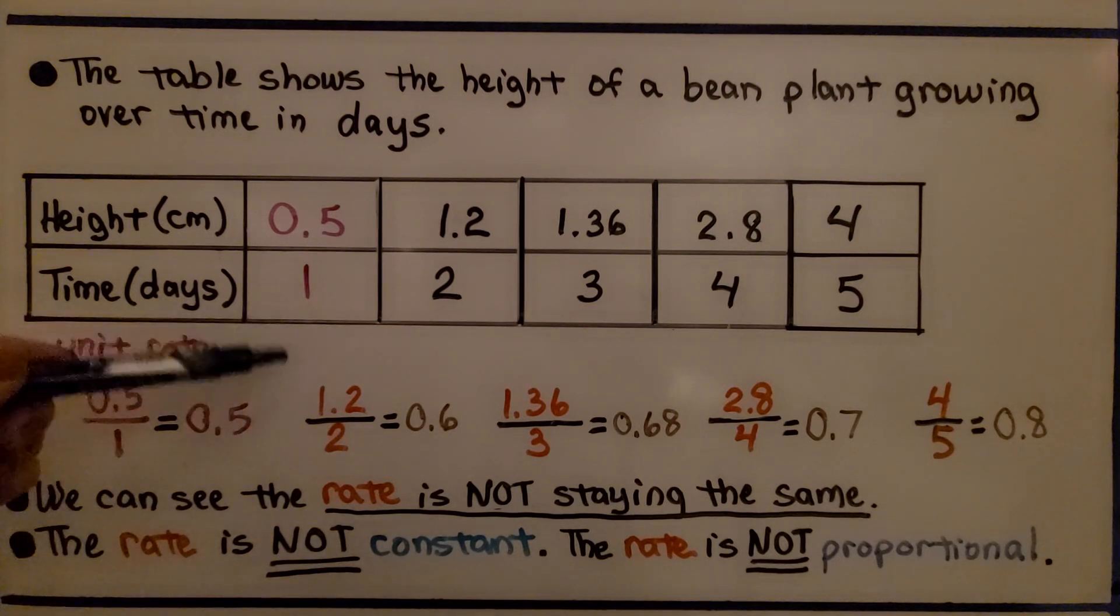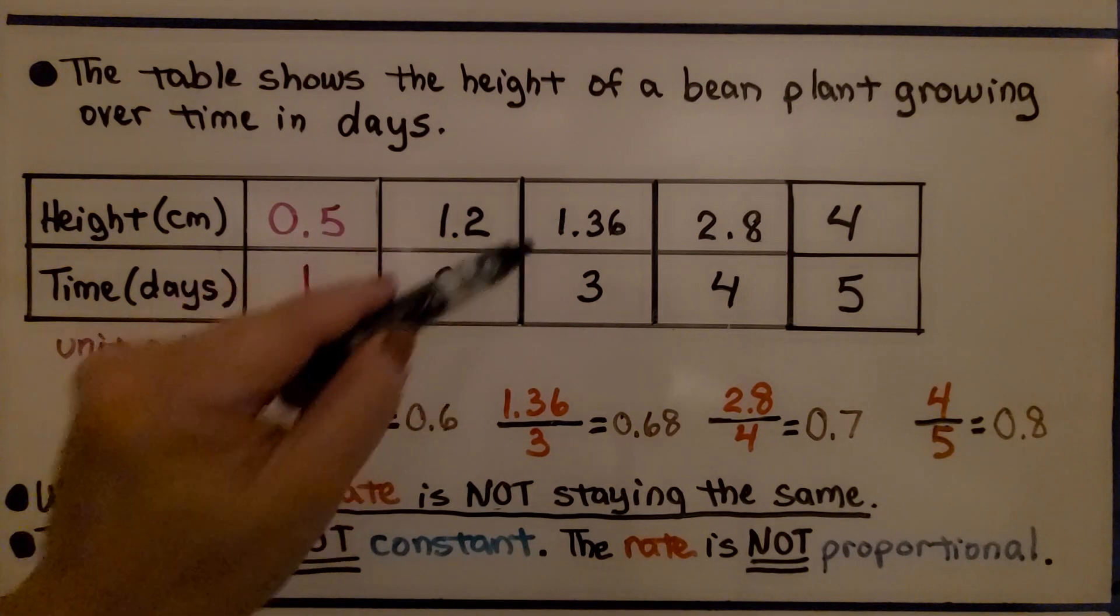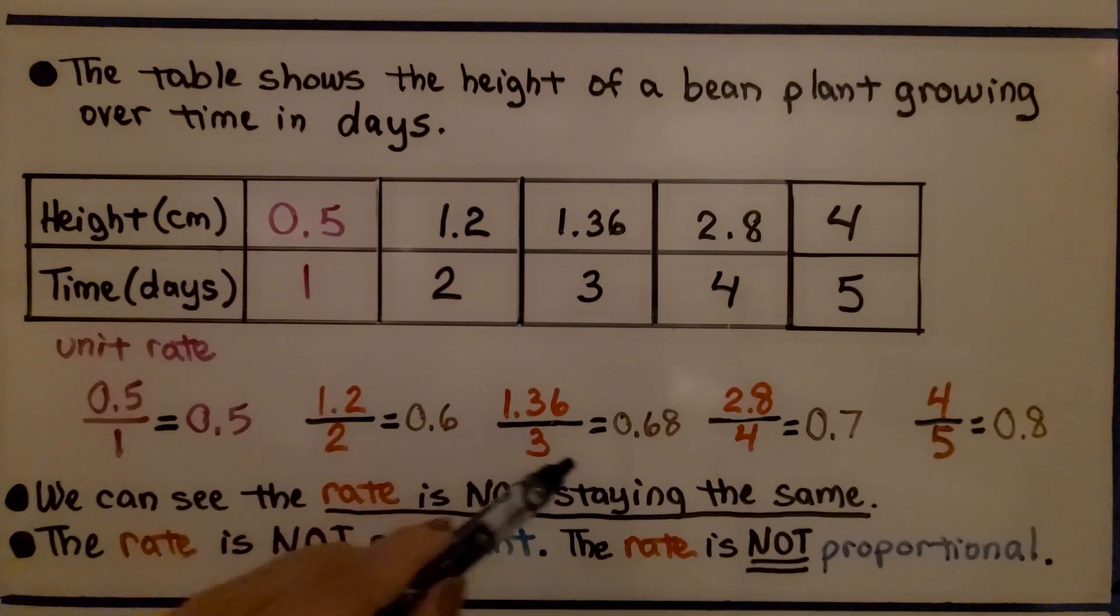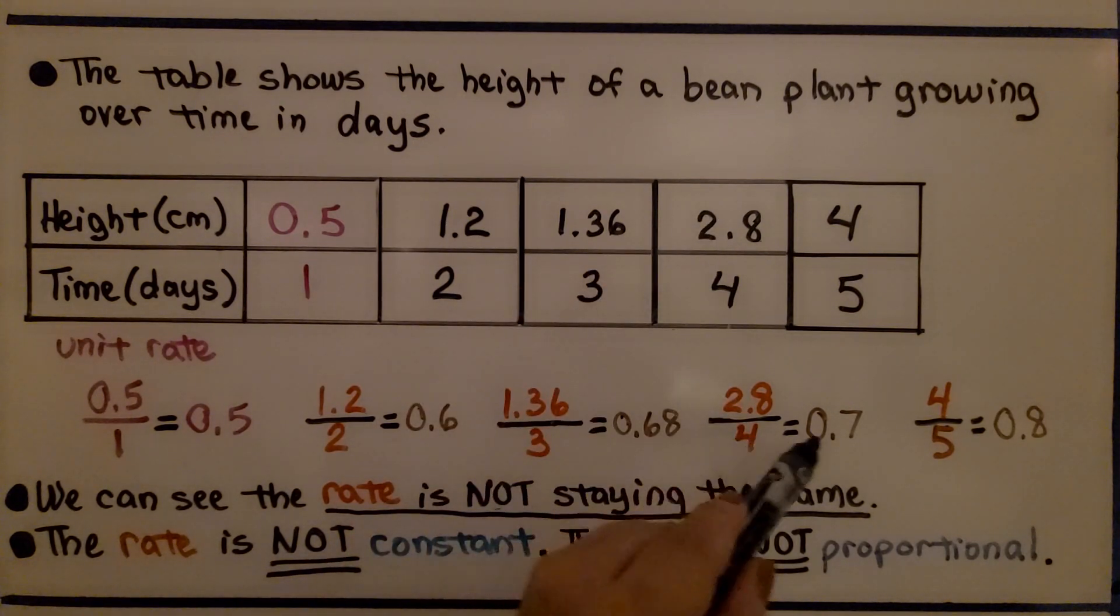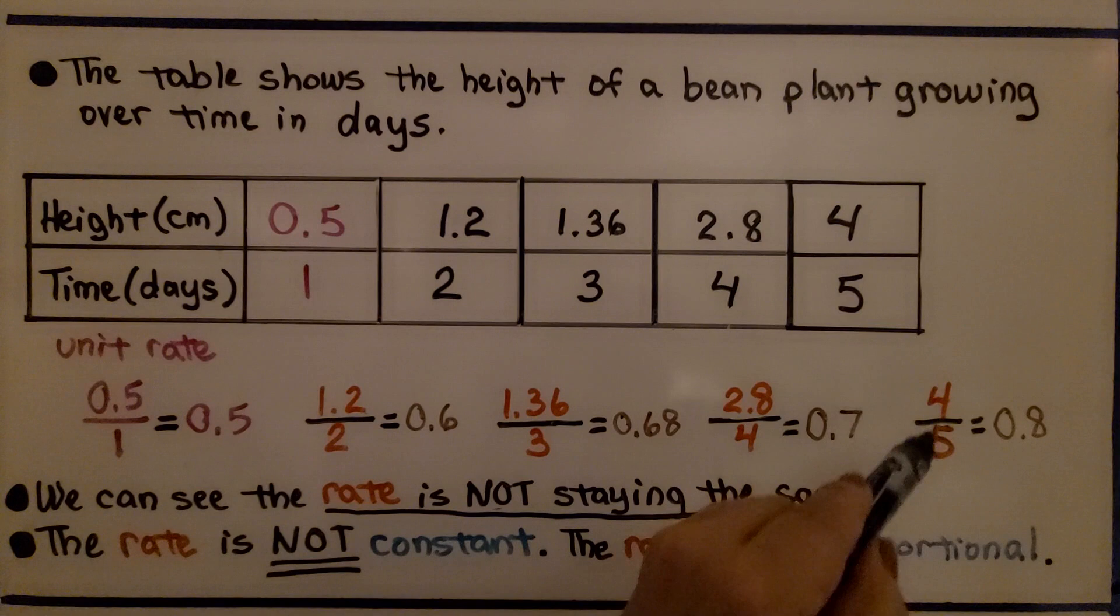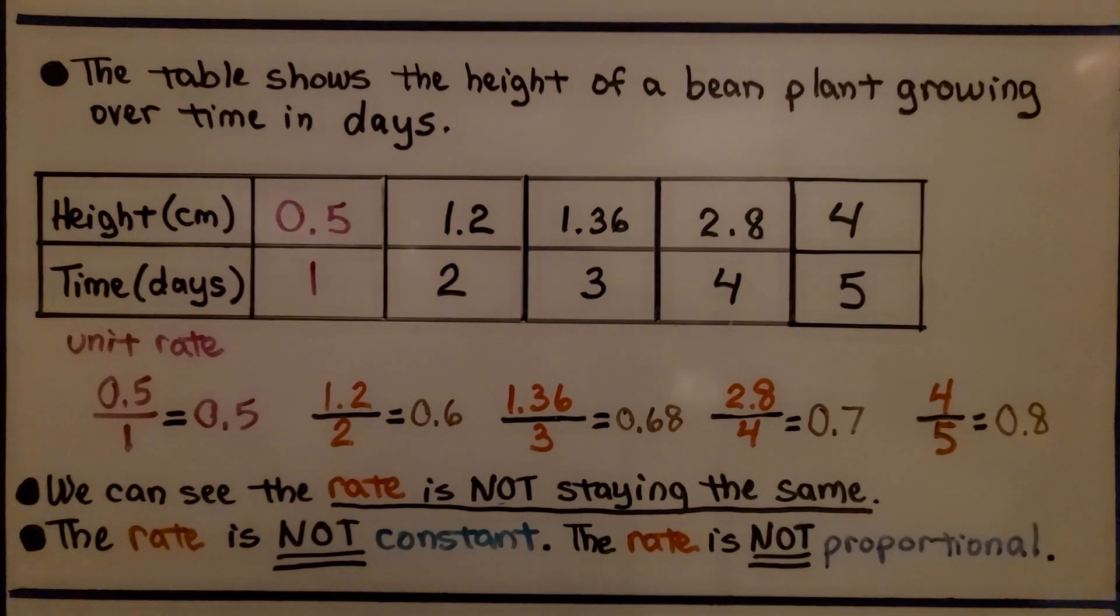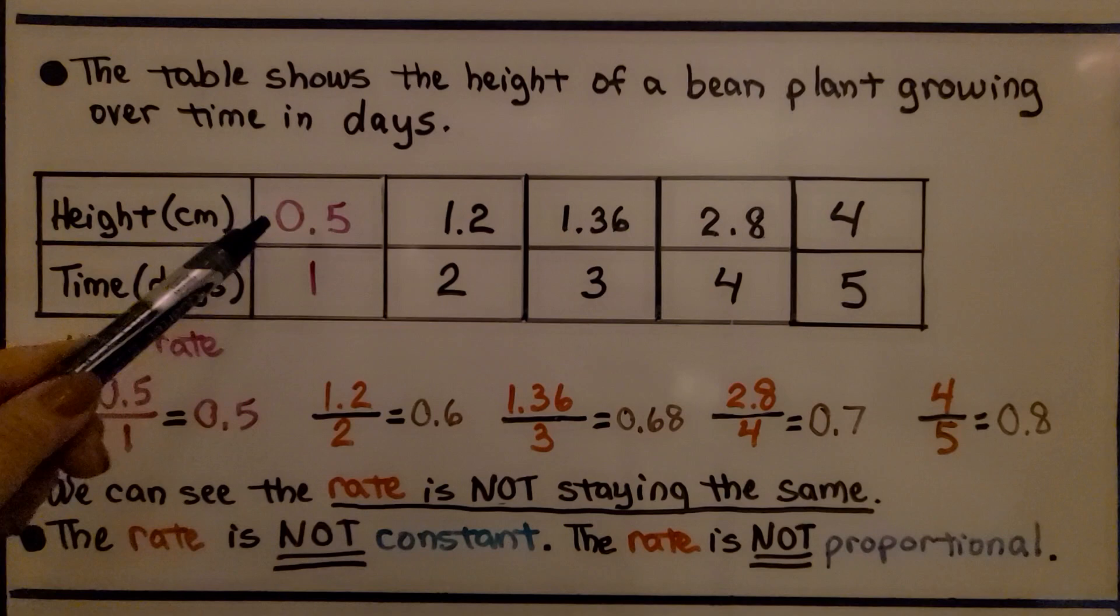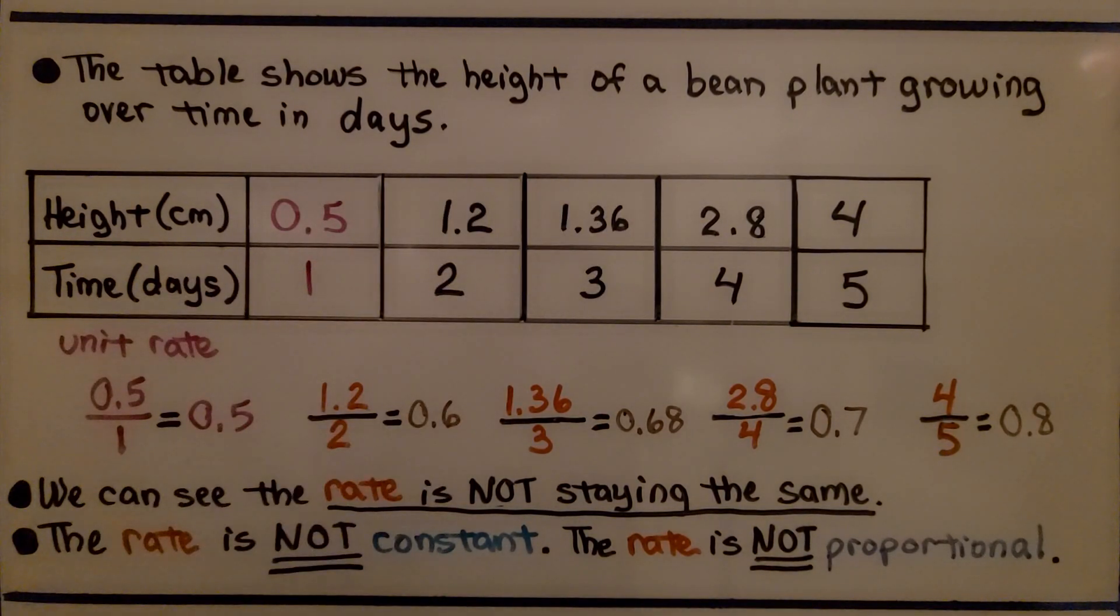But look what happens when we do 1.2 divided by two, we get 0.6. And when we do 1.36 divided by three, we get 0.68. And when we do 2.8 divided by four, we get 0.7. And when we do four divided by five, we get 0.8. We can see the rate is not staying the same. The rate is not constant. The rate is not proportional. If the rate was proportional, it would be increasing by 0.5 of a centimeter each day. And it's not.